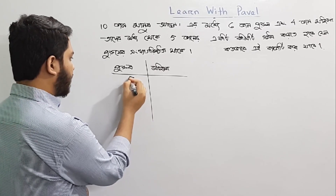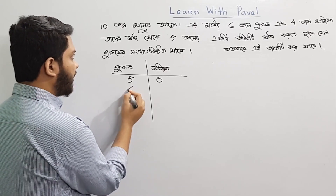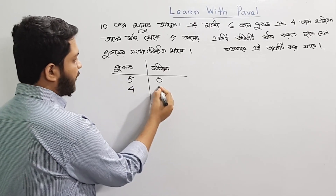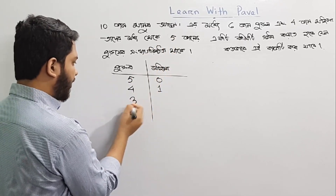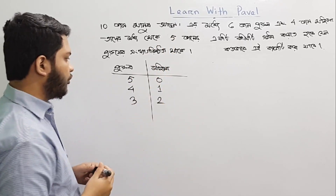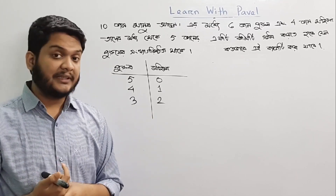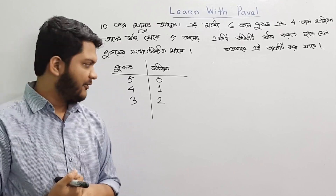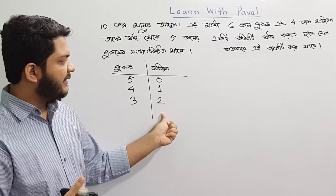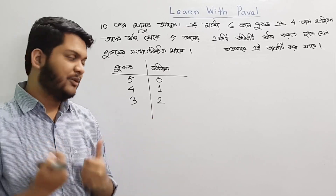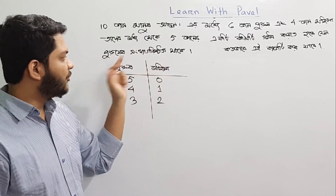We have a 4-gang and a 1-gang. So we have a 3-gang, and then we have a 2-gang. This is a simple way.